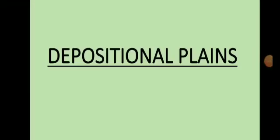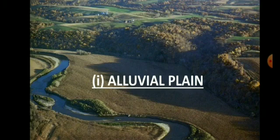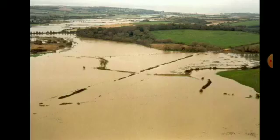The next type is depositional plains. They are formed by the deposition of sediments by rivers, glaciers, lakes, and even wind. Alluvial plains are formed by river deposits. During floods, the river carries sediments and deposits them in flooded areas, thereby forming alluvial plains.